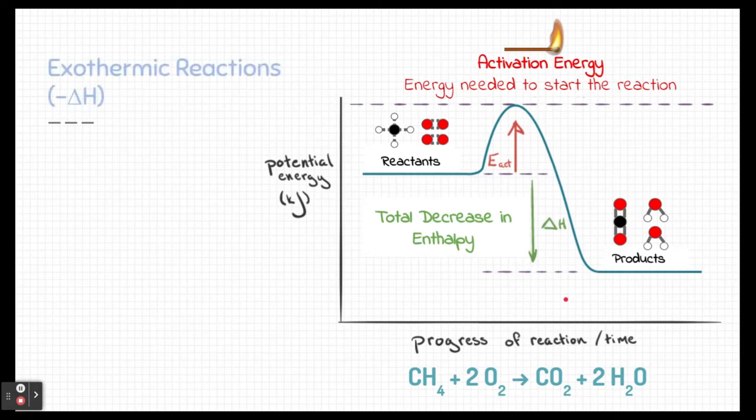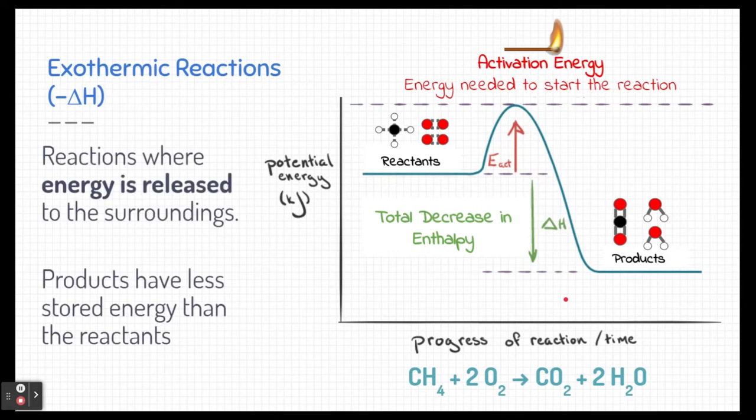Now the graph you're seeing here is an exothermic reaction. It's a negative ΔH. An exothermic reaction is a reaction where energy is released to the surroundings, and typically the products have less stored energy than the reactants, as you see here.